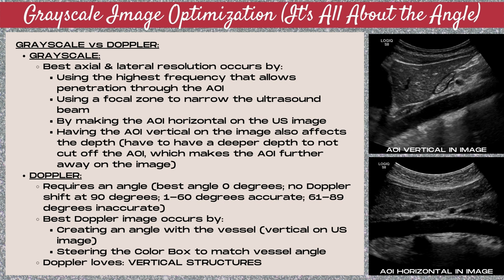For Doppler, an angle is required and the best angle is zero degrees, where the ultrasound transducer and the area of interest are parallel to each other. No Doppler shift occurs at 90 degrees where the ultrasound beam and area of interest are perpendicular. Angles of 1 through 60 degrees are accurate, while 61 to 89 degree angles are inaccurate. The best Doppler image occurs by creating an angle with a vessel so that the vessel is vertical on the image, and also steering the color box to match the vessel angle when using a linear transducer.